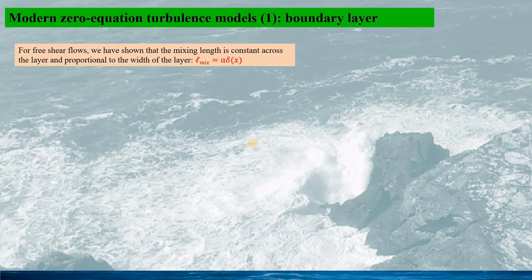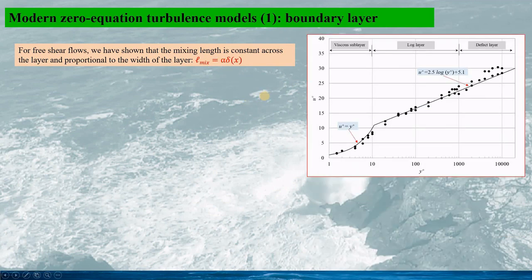In the previous examples for the free shear flows, we have shown that the mixing length is a constant across the layer and proportional to the width of the layer, given by this formula. However, in many practical problems, the turbulent flows are subject to the boundaries. Therefore the boundary layer would be very important for the turbulent flows. This figure shows the conventional profile of the boundary layer.